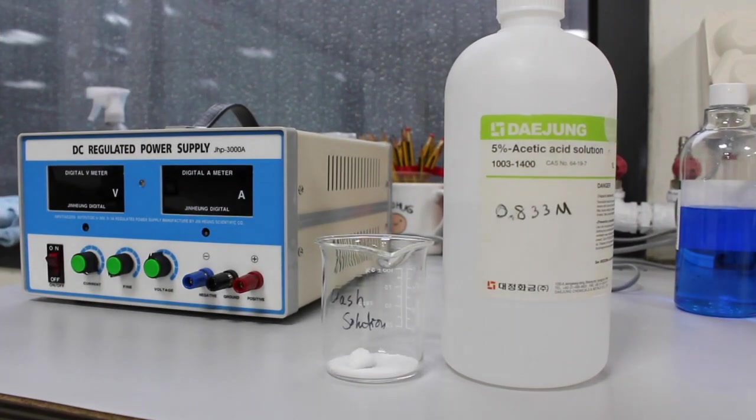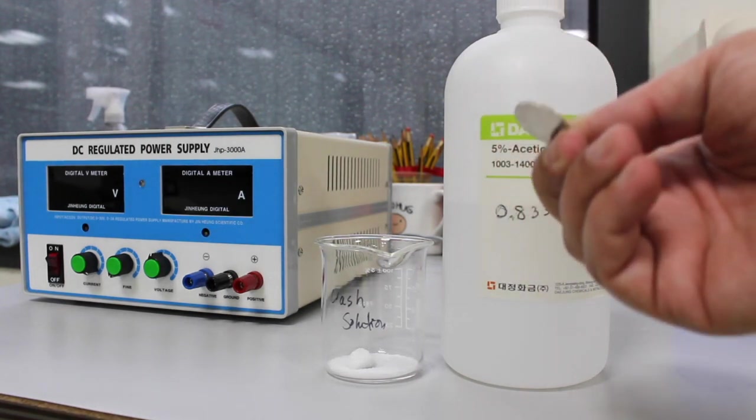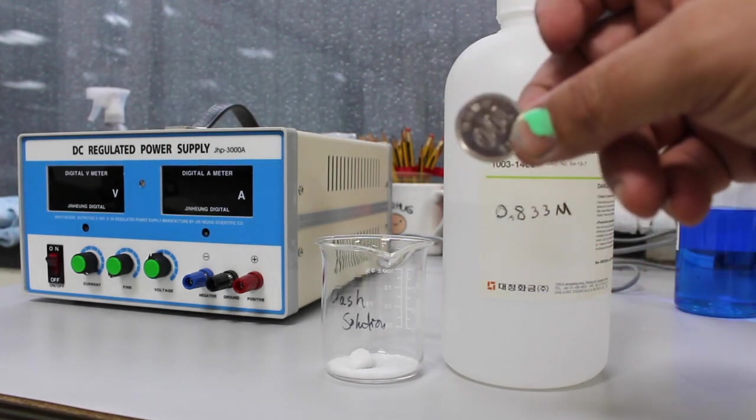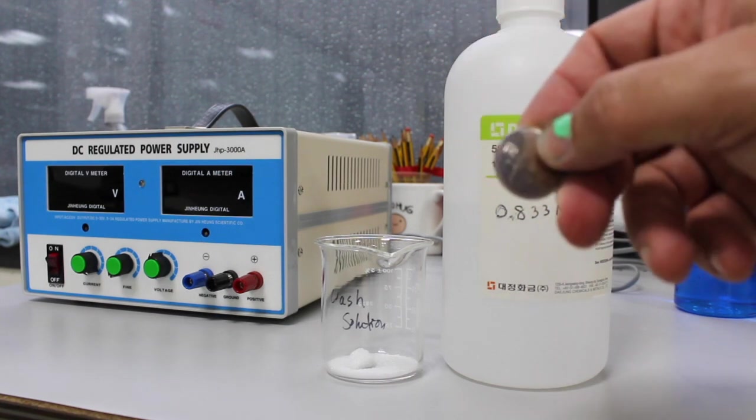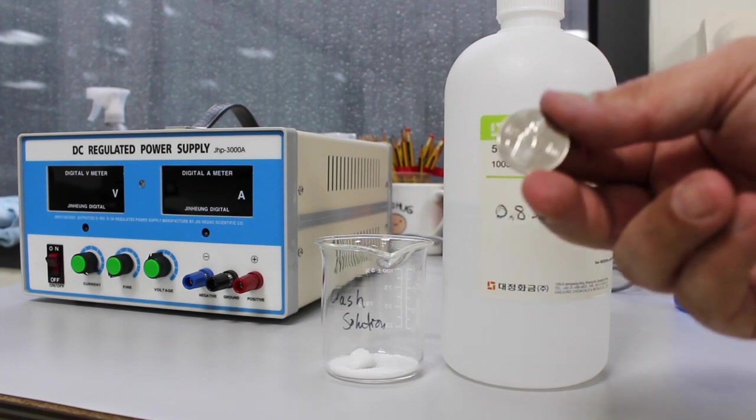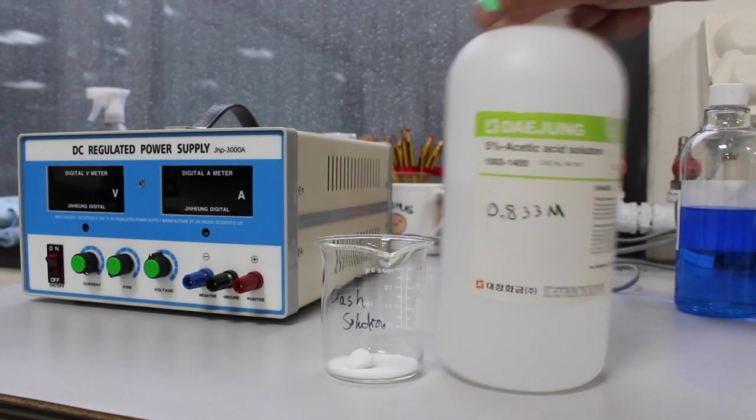So first things first, you are going to be designing a procedure to do this. Essentially we are going to be plating copper onto a 100 won coin. We have brass here, we are going to be plating this copper. So we need to wash this first and get all the grime and everything from it being used off of it. We are going to use the table salt and acetic acid solution to do that.